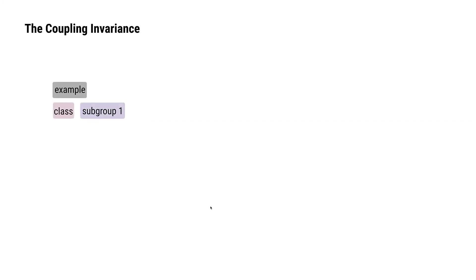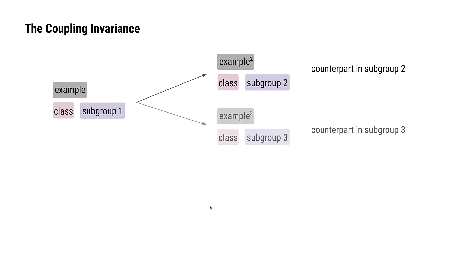Consider any example in the dataset. It belongs to a class and subgroup, 1 in this case. We ask a simple question: what would this example look like if it was in subgroup 2 instead? This is an imagined version of this example that would lie in subgroup 2. We can pose the same question for the other subgroups inside this class as well.